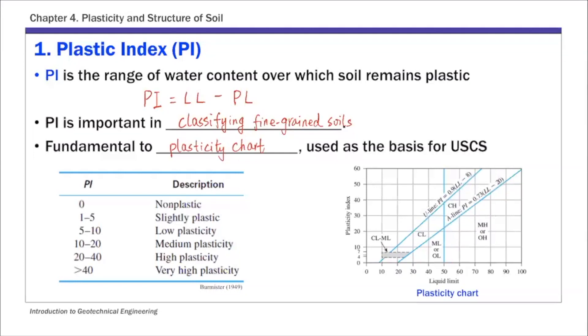This table shows the qualitative description of soil based on its PI value. So if PI is zero, it's non-plastic. And if PI is greater than 40, the soil has very high plasticity. There's just some qualitative description. So that's the first index, plastic index.